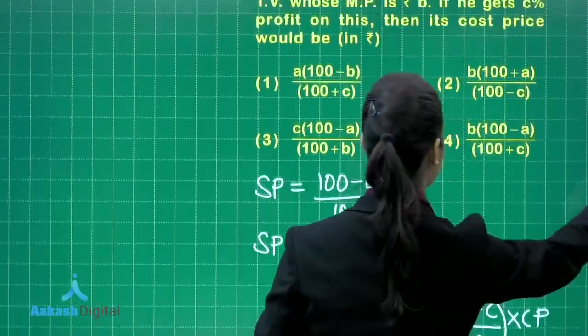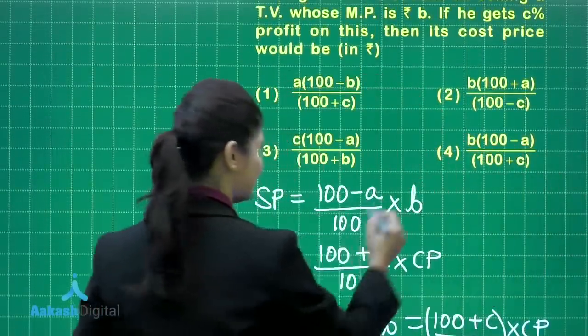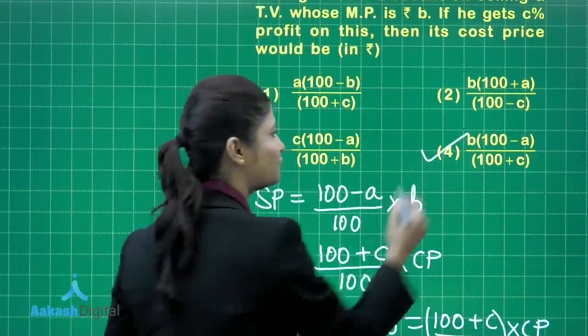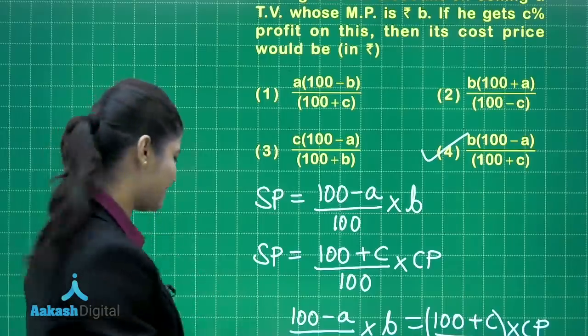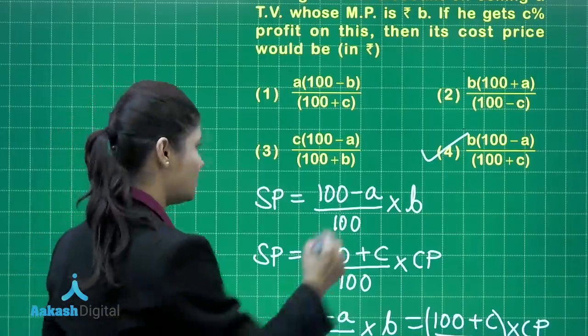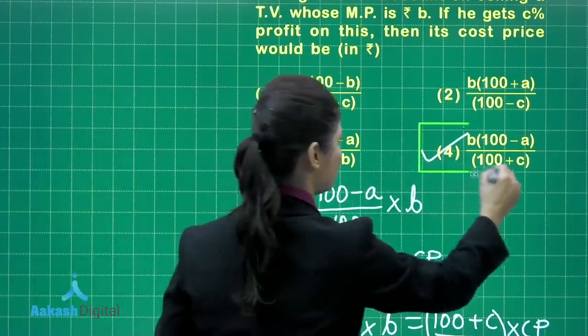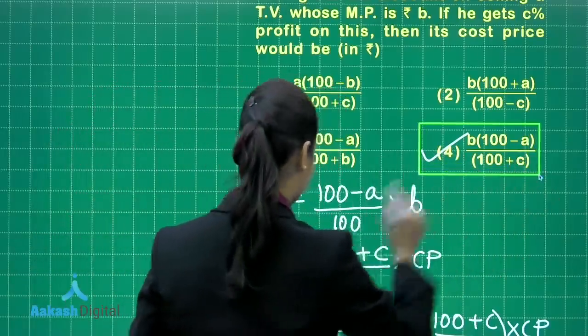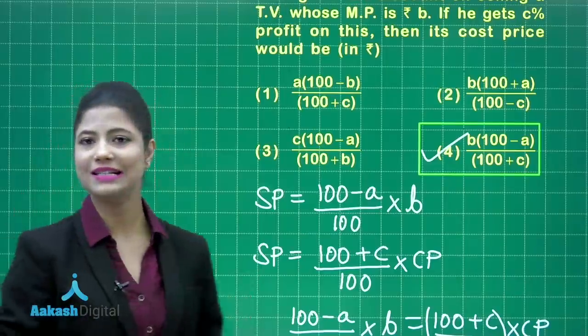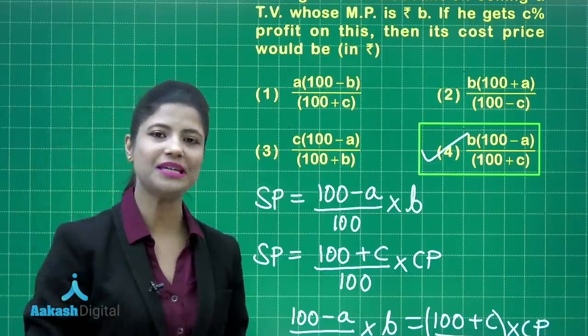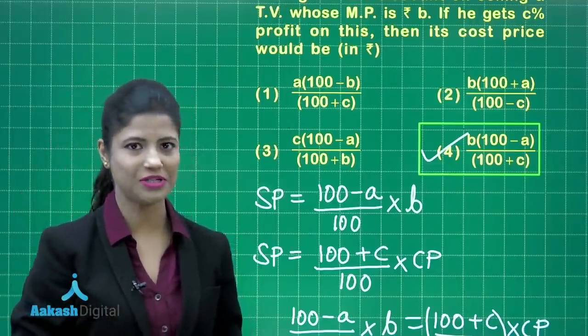So the required cost price is b(100 − a) / (100 + c), based on the discount, mark price, and profit percentage. Out of the four options, option number 4 gives the correct answer. I hope it is clear. Let us proceed to the next question.